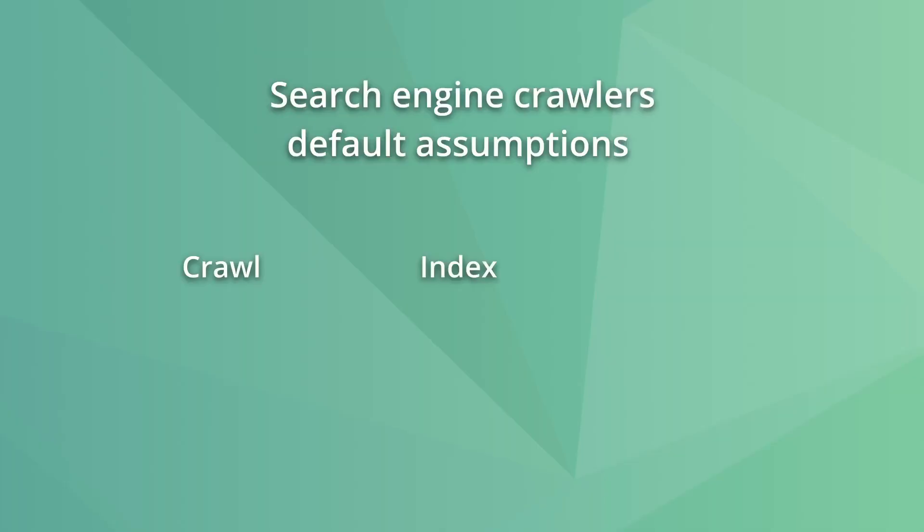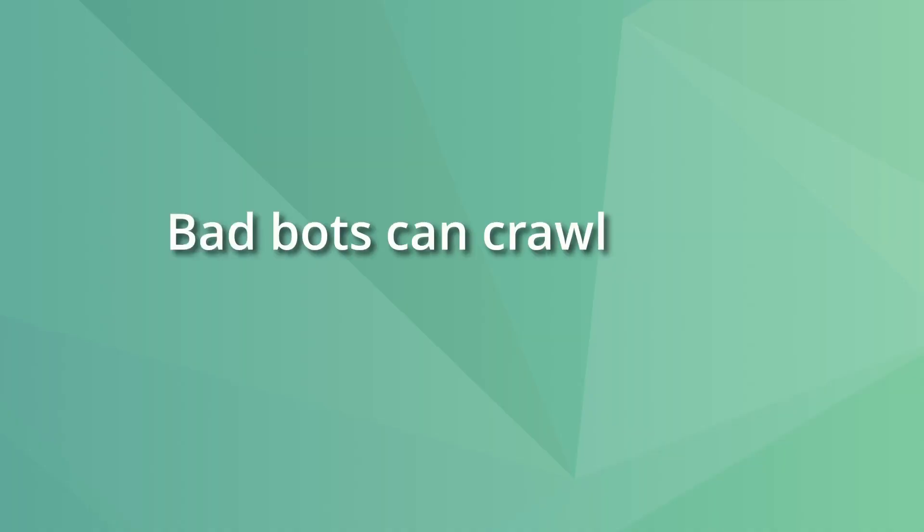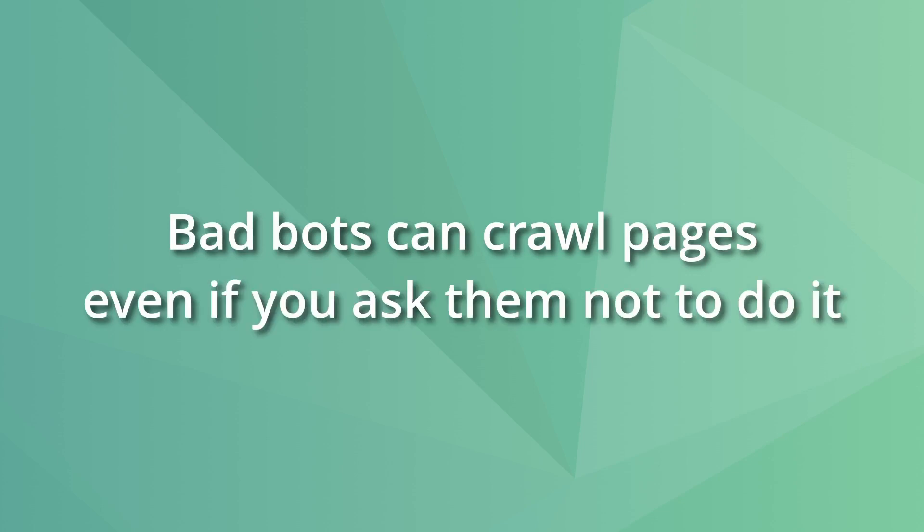The default assumption is that bots can crawl, index, and rank all the pages on your website unless you specifically disallow crawling or use a noindex meta tag. So if a robots.txt file doesn't exist or is not accessible, crawlers will act as if there were no restrictions in place. Additionally, crawlers don't have to follow the instructions in the robots.txt file — this means bad bots can crawl pages even if you ask them not to. Fortunately, most crawlers are respectable and will follow your instructions.